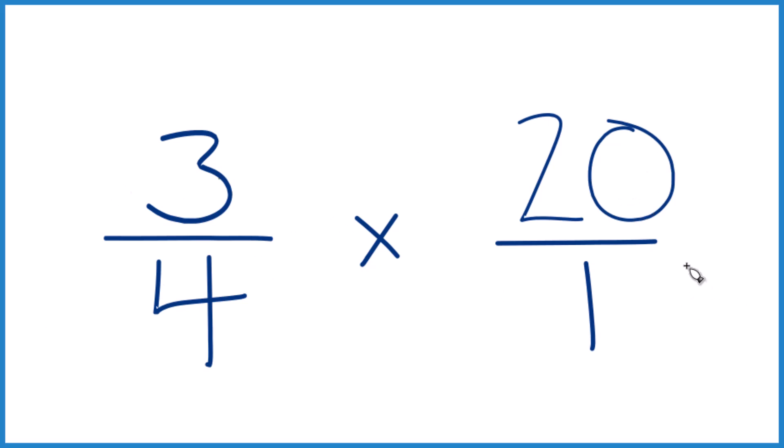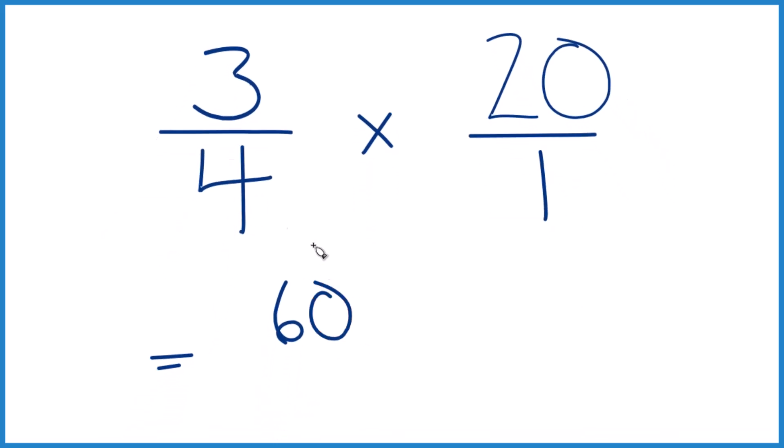but now everything lines up. We multiply fractions like three-fourths here, multiply the numerators, then the denominators. So three times 20, that equals 60. Four times 1, that's just 4.